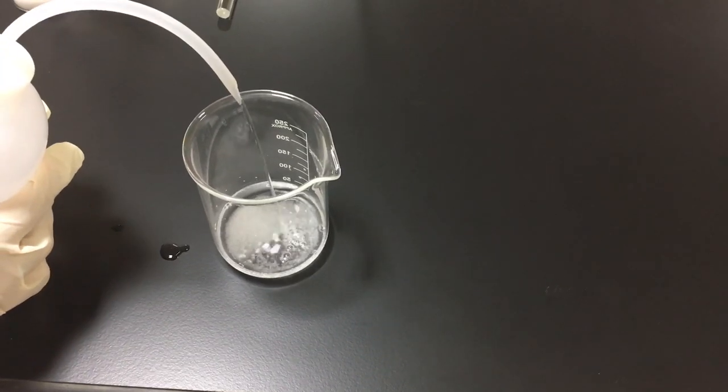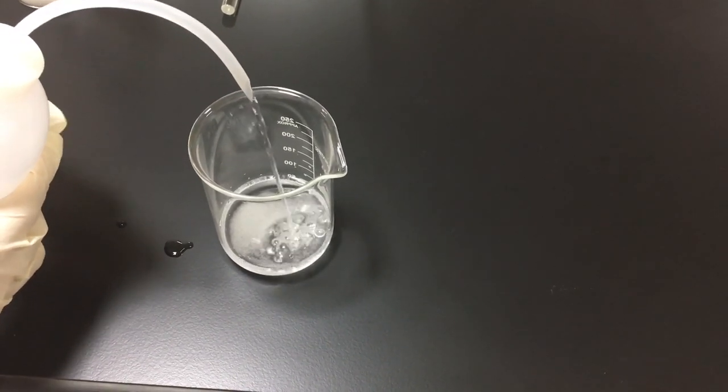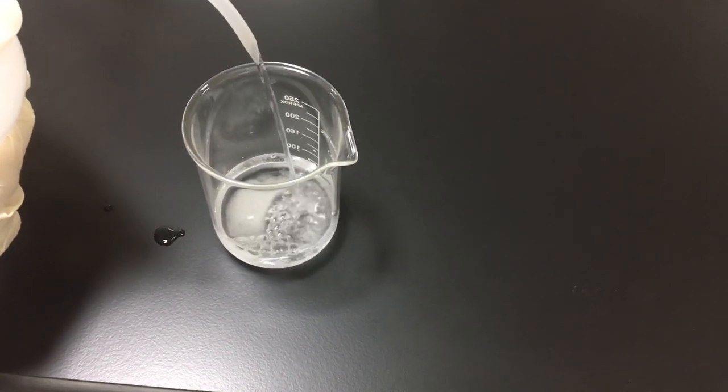Add a small amount of water to the beaker, then dissolve the sugar by using a stirring rod.